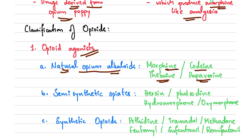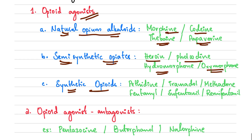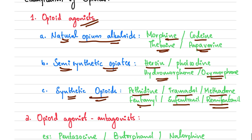Following that, we have the semi-synthetic opiates which are heroin, nalcodeine, hydromorphone, and oxymorphone. Then we have the synthetic opioids: pethidine, tramadol, methadone, fentanyl, and remifentanil.